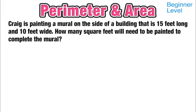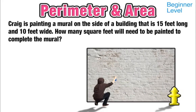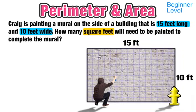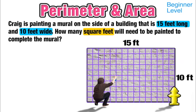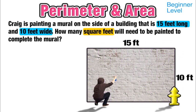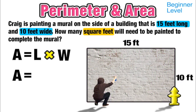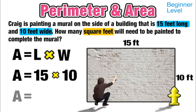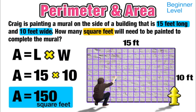Next, a street artist named Craig is painting a mural on a building that is 15 feet long and 10 feet wide. We want to find exactly how many square feet he needs to paint to complete the mural. Since we want to find the inside of the rectangle, this is an area question. Using area equals length times width: 15 times 10 equals 150 square feet.